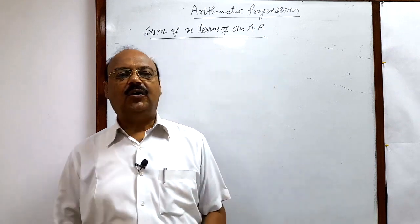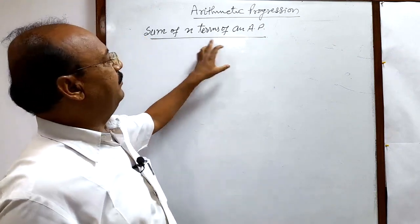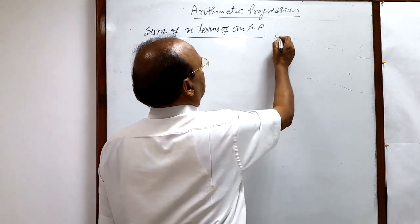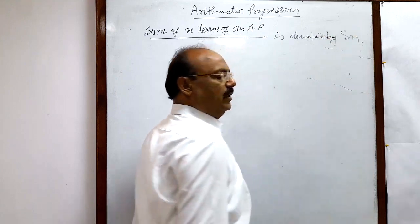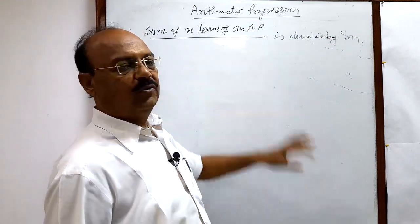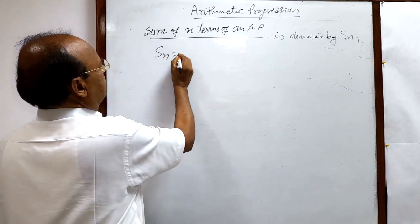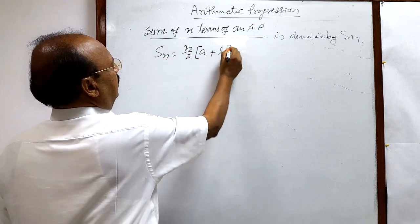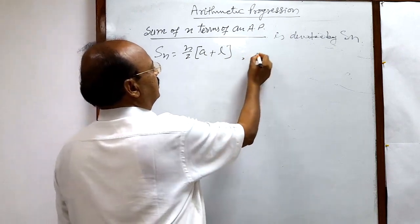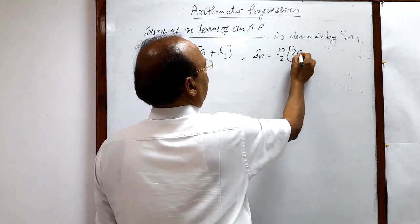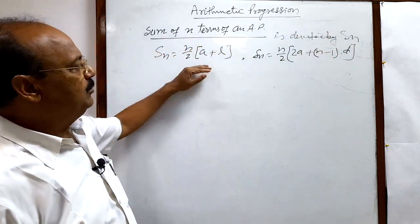Welcome students. Here we will understand how to get the sum of n terms of an arithmetic progression. The sum of n terms is denoted by the notation Sn. There is a very interesting simple formula: Sn is equal to n/2 times (a plus l), where a is the first term and l is the last term. Another formula is Sn equal to n/2 times (2a plus n minus 1 into d).